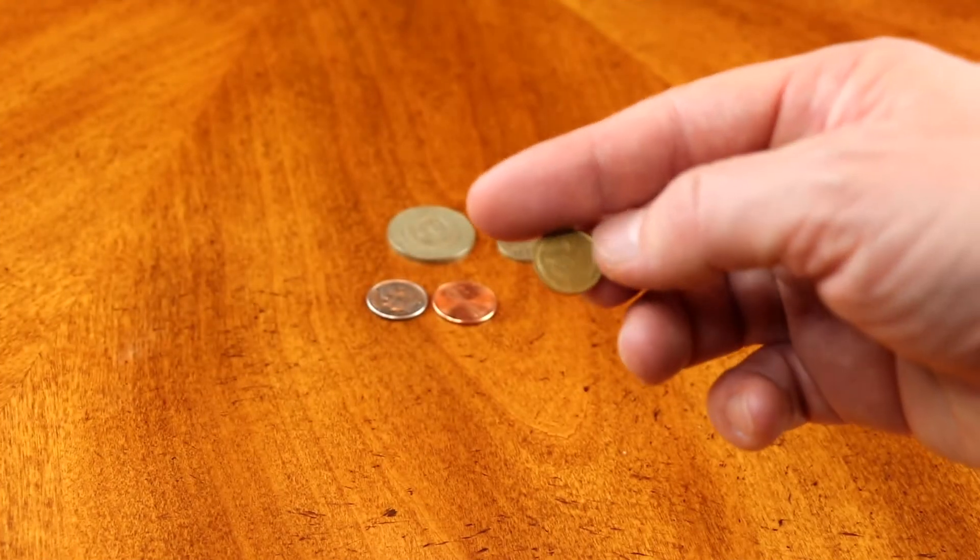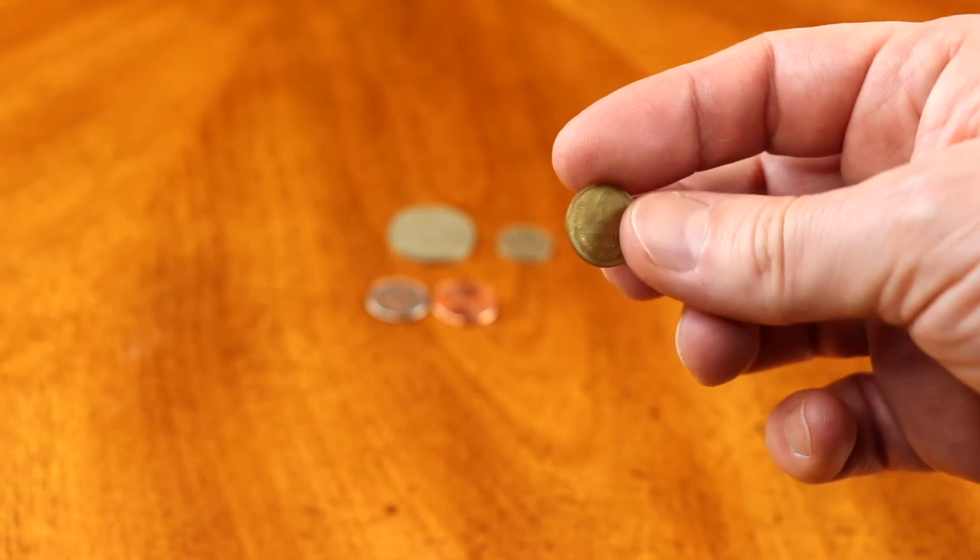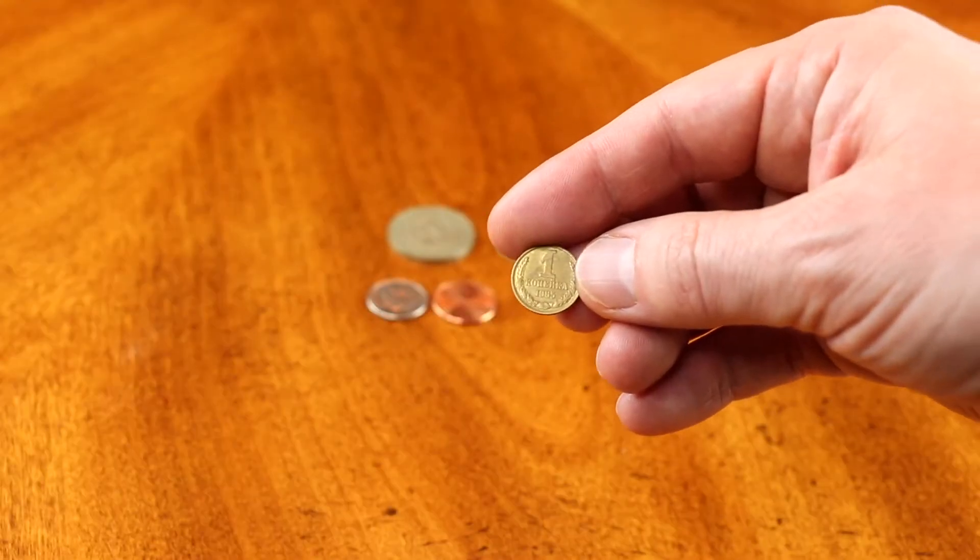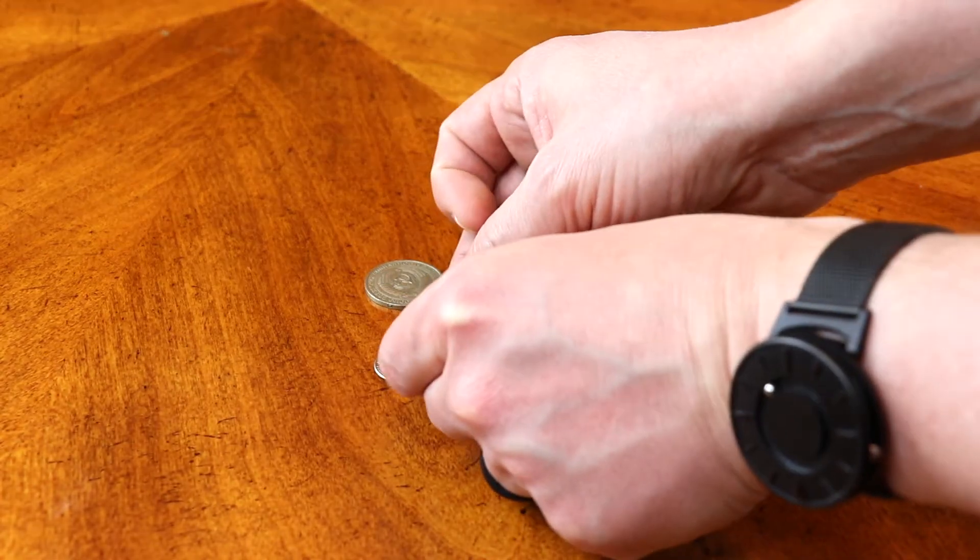This was the smallest coin in Soviet Union. Look at the size. One Soviet cent, one Kopeyka. And if I compare it with a penny, look at the size.